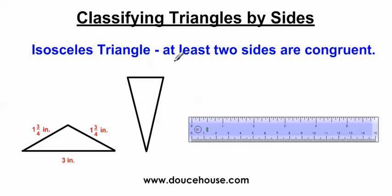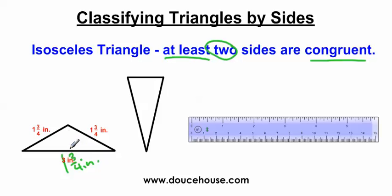Moving on, we have the isosceles triangle. At least two sides are congruent. I measured the sides here and got one and three-quarters inches, one and three-quarters inches, and three inches. Since two of these sides are equal to each other, this is going to be an isosceles triangle. Now, it says at least two sides, so if the third side were also one and three-quarters inches, it would technically still be an isosceles triangle. But there's a better name for a triangle with all three sides congruent. Generally, if you have only two sides congruent, call it isosceles. I'll put tick marks on this triangle — two sides with the same number of tick marks means those two sides are congruent, making it an isosceles triangle.